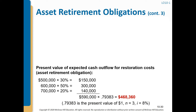The present value of expected cash outflow from restoration costs gives us the asset retirement obligation. The expected cash flow is calculated as: $500,000 × 30% = $150,000; $600,000 × 50% = $300,000; and $700,000 × 20% = $140,000. This gives us the total expected cash flow, which is then multiplied by the present value factor.